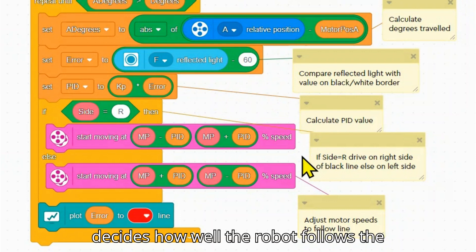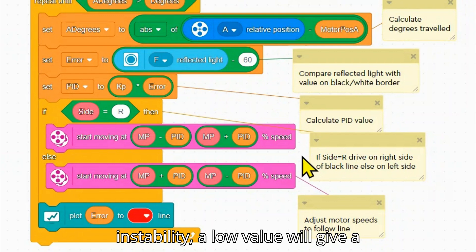The value of KP decides how well the robot follows the line. A high value will cause instability. A low value will give a slow response.